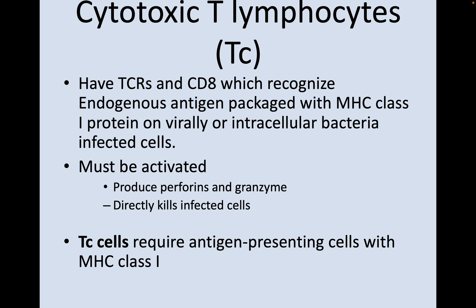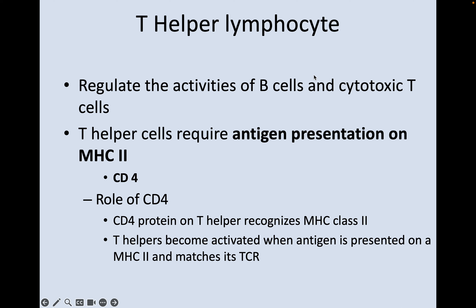Cytotoxic T lymphocytes have TCRs and CD8, which recognize endogenous antigen packaged with MHC class 1 protein on virally or intracellularly bacteria-infected cells. These cytotoxic T lymphocytes produce perforins, which perforate cell membranes of the pathogen, and also granzyme — these things directly kill infected cells. Importantly, cytotoxic T lymphocytes require antigen-presenting cells with MHC class 1, whereas T helper lymphocytes require antigen presentation on MHC class 2.